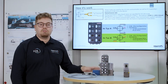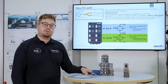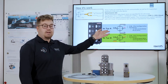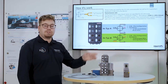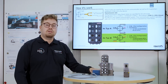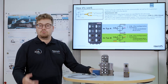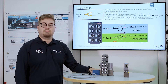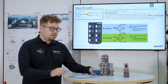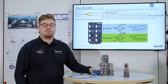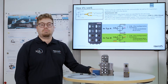Regarding IO-Link, we have to distinguish between a class A port and a class B port. For our valves we use the class B port, since besides the two-way communication we also ensure the supply voltage with this single 5-wire M12 cable.